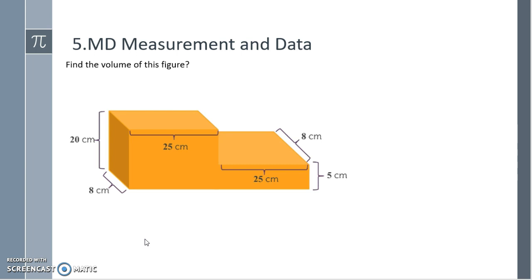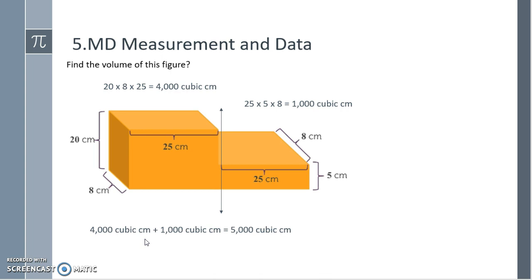Find the volume of this figure. Take a moment, pause the video to see if you can do it. Again, splitting it down the middle, I see that I have two separate right rectangular prisms. On the left, I take 20 times 8 times 25 for a total of 4,000 cubic centimeters. On the right, I can take 25 times 5 times 8 for 1,000 cubic centimeters. But because they are combined, I need to add them together. So 4,000 plus 1,000 is 5,000 cubic centimeters.